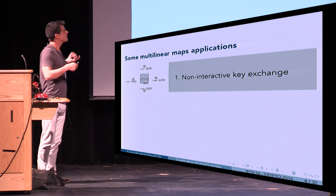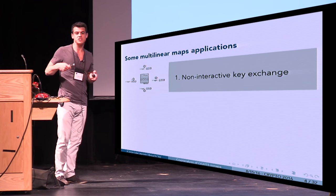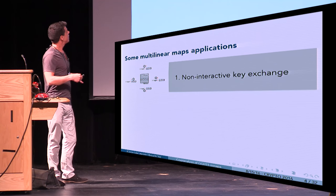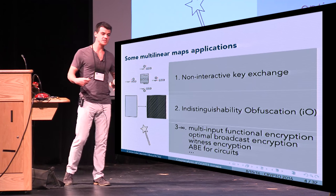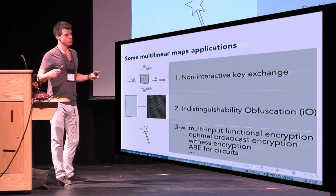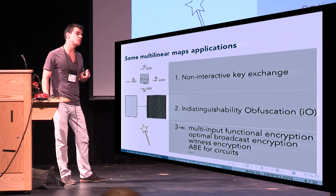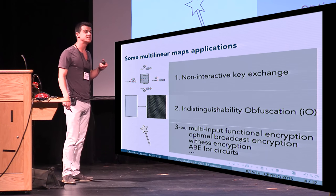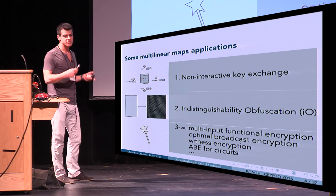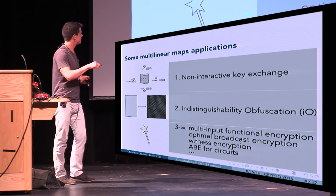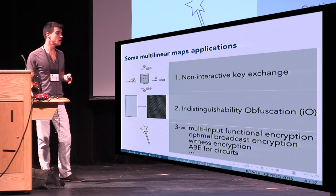Why do we care about multilinear maps? One of the first applications is non-interactive key exchange, a generalization of Diffie-Hellman. But the key thing we can build from approximate multilinear maps is indistinguishability obfuscation (I.O.), which has a lot of really exciting applications and theoretical consequences. We can also build multi-input functional encryption, optimal broadcast encryption, witness encryption, ABE for circuits, and much more.